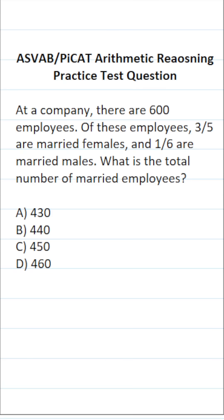So let's start with the married females. We know there are 600 employees at the company and three-fifths of them are married females. So we're going to do 600 times three-fifths. We can write 600 as a fraction by placing it over one.